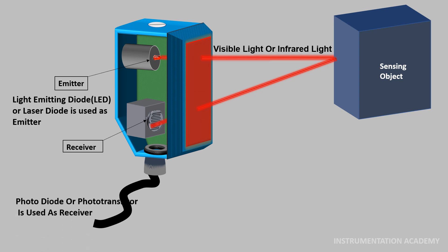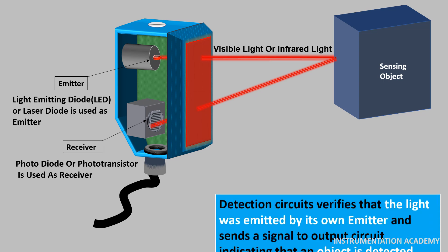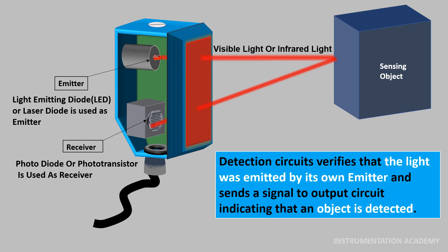The receiver detects the change in light and converts it into an electrical output. Usually, photodiode or phototransistor is used as receiver. The electrical quantity is then amplified by an amplifier and is checked by detection circuits which verifies that the light was emitted by its own emitter and sends a signal to output circuit indicating that an object is detected and triggers an output.